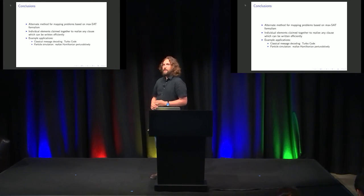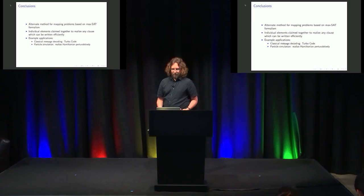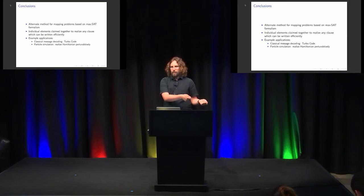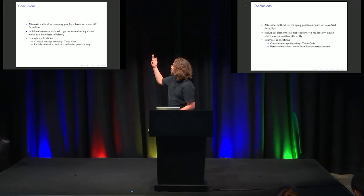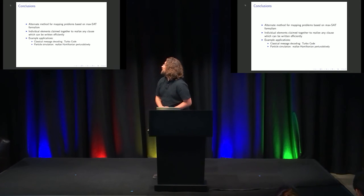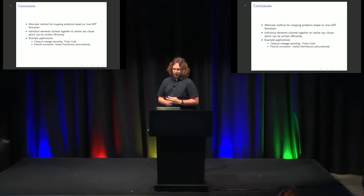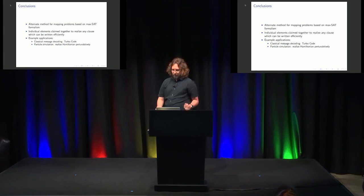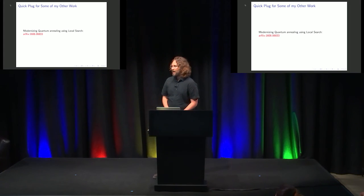So here are our conclusions. We have made an alternative method for mapping problems based on the MaxSAT problem formalism. With our new technique, we can do any clause that you can write efficiently, unlike our current paper where some clauses are inefficient. I gave a couple examples: classical message decoding with the turbo code, and some ways you could realize Hamiltonians perturbatively — basically taking advantage of the fact that our gadget was built off of symmetry. It has a high degree of symmetry, and that means the transitions just happened to all work out to be the same.